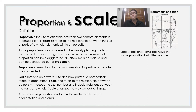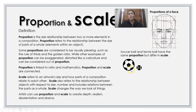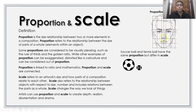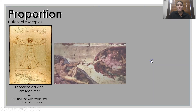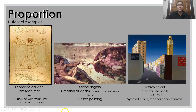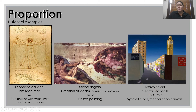We've got examples of the proportion of the face, and also a soccer ball and tennis ball — they have the same proportion but they are different in scale. Some historical examples of proportion being shown in work: we have the Vitruvian Man, the famous work by da Vinci, which shows the proportions of the human body — also depicted in Michelangelo's Creation of Adam on the Sistine Chapel ceiling. Geoffrey Smart shows it differently with a building with a small person running between, which does show proportion.